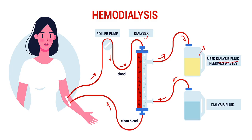The dialyzer is a cylinder that is separated by a membrane, and that membrane mainly performs the function of a semi-permeable membrane. As you know, the semi-permeable membrane allows some molecules to pass through it but not all. This membrane in the dialyzer will allow small molecules such as urea or potassium that are present in excess amount in our blood to pass through, but it will not allow proteins, amino acids, or lipids that are present in our blood to pass out.